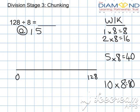I want the biggest chunk to get as close to 128 as possible. So I'm gonna add my 10 groups of 8. I know 10 groups of 8 is 80, so that's 10 times 8.